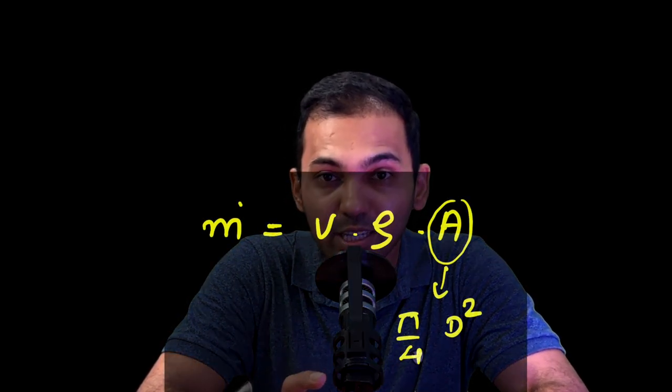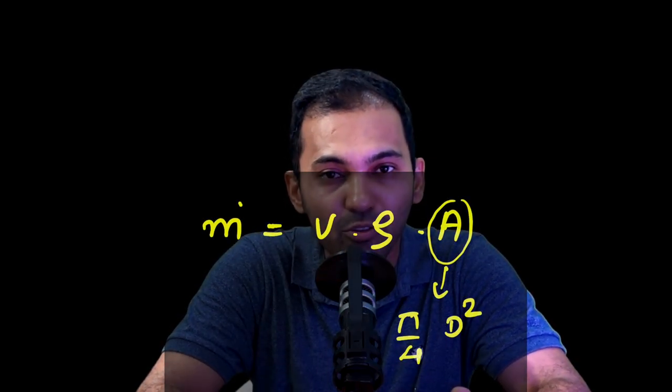Starting with the column diameter — especially packed column diameter — always remember that when we calculate the column diameter, a common equation is used which we also call the continuity equation: mass flow rate equals velocity into density into area, where area equals pi/4 × D², and the density is of the gas. By means of this equation, in any column we can find out the diameter.